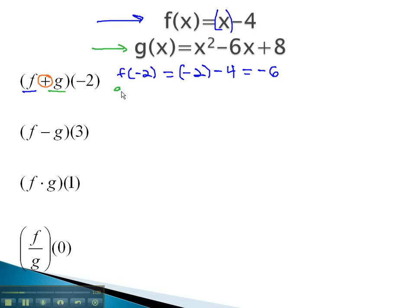g of negative 2 means we plug negative 2 in the g function to get negative 2 squared, minus 6 times negative 2, plus 8, as we replace each of the x's with negative 2.